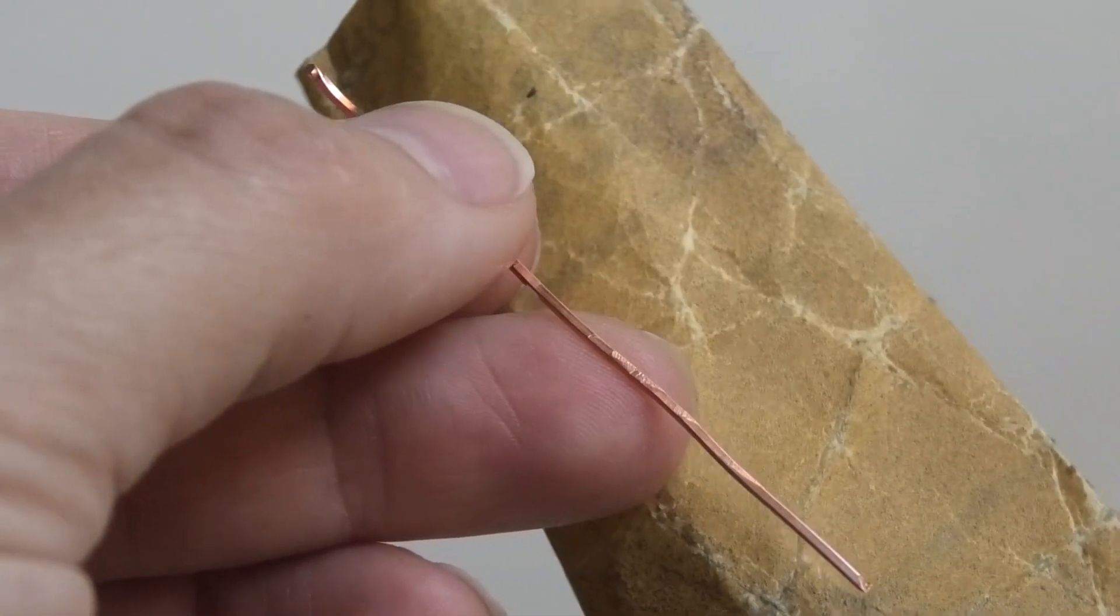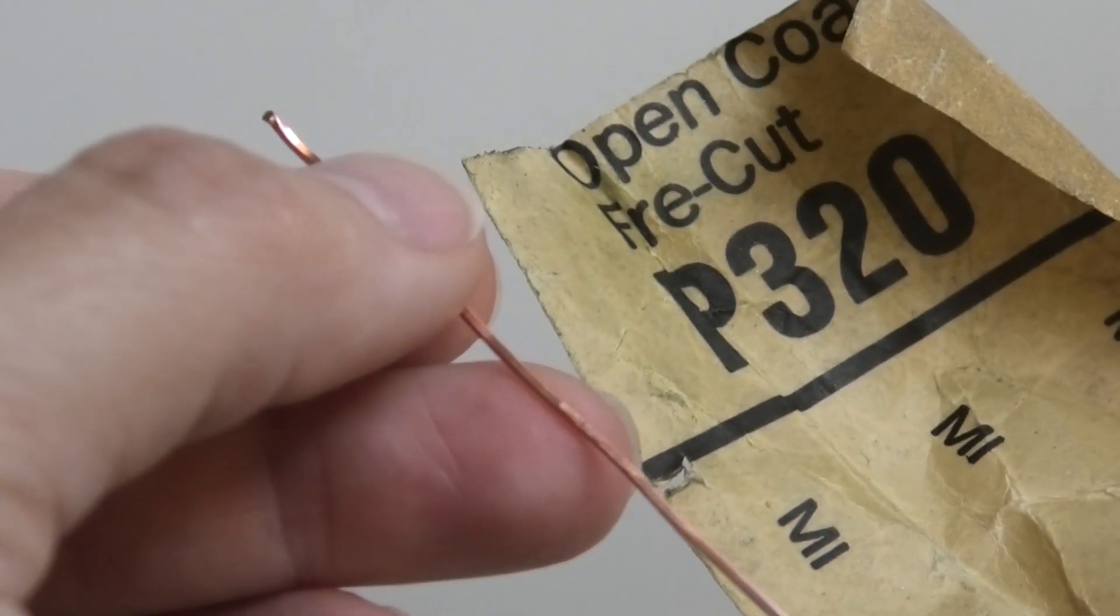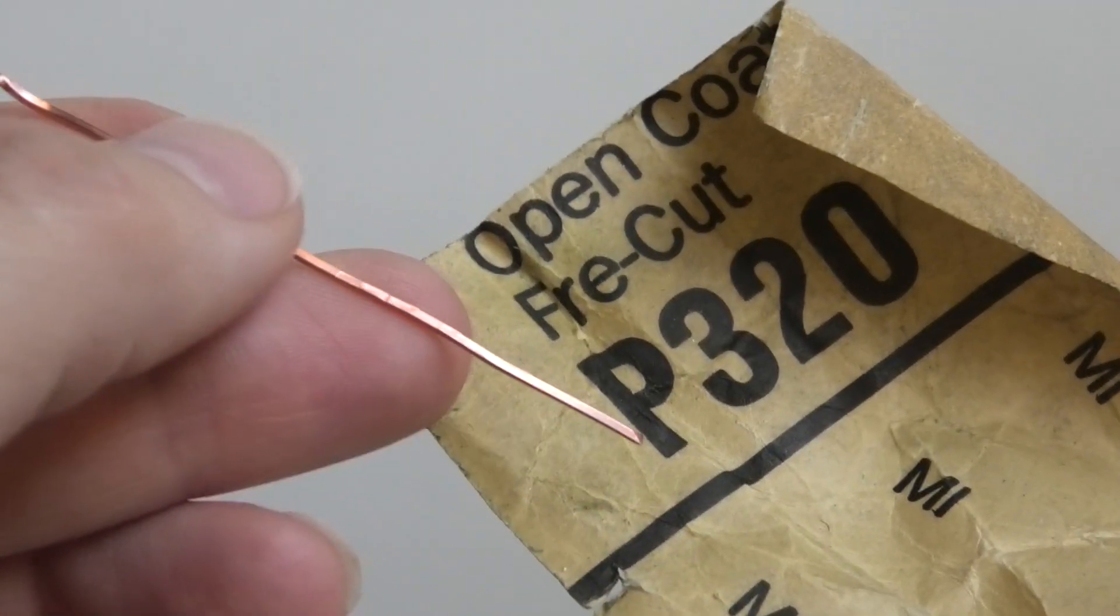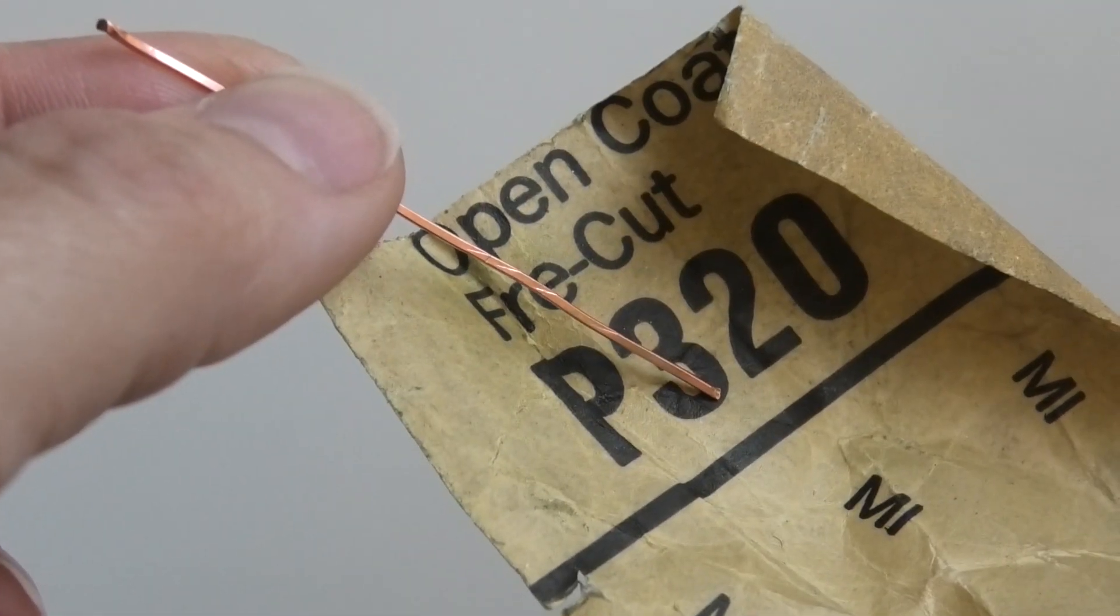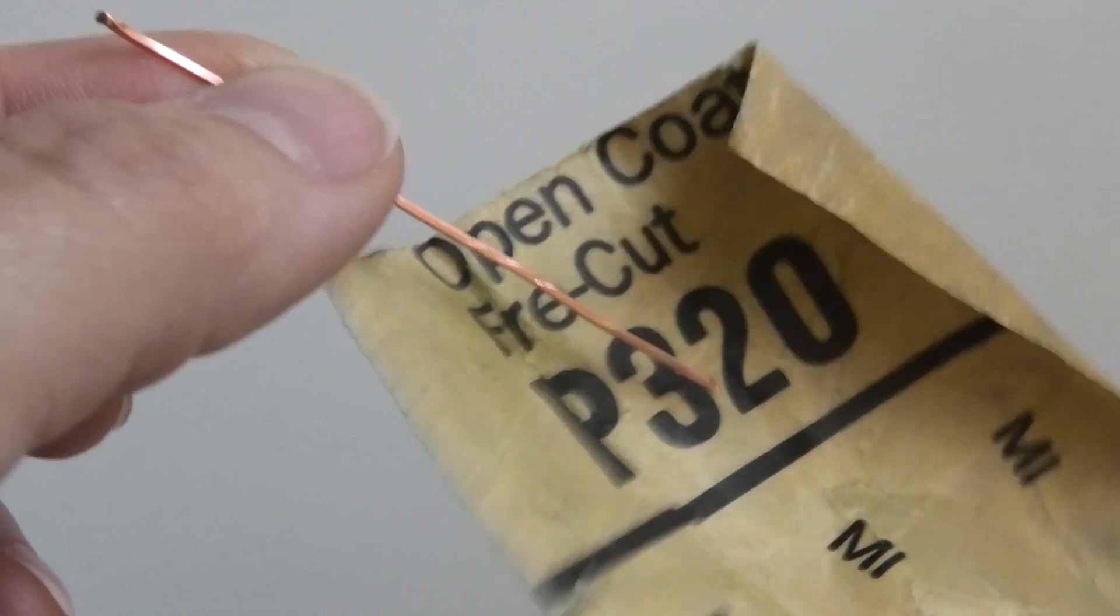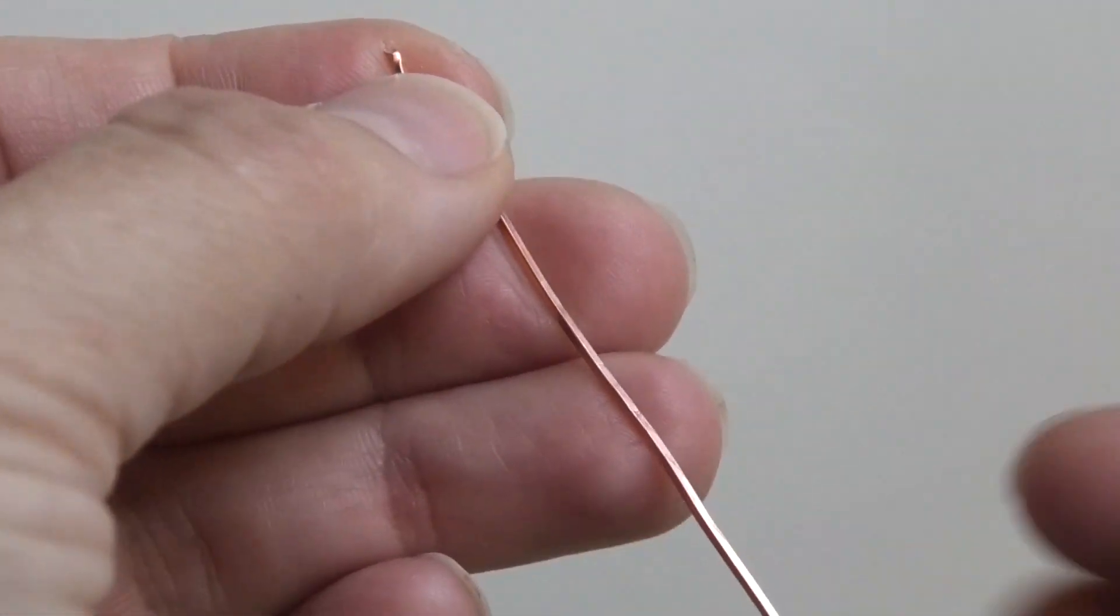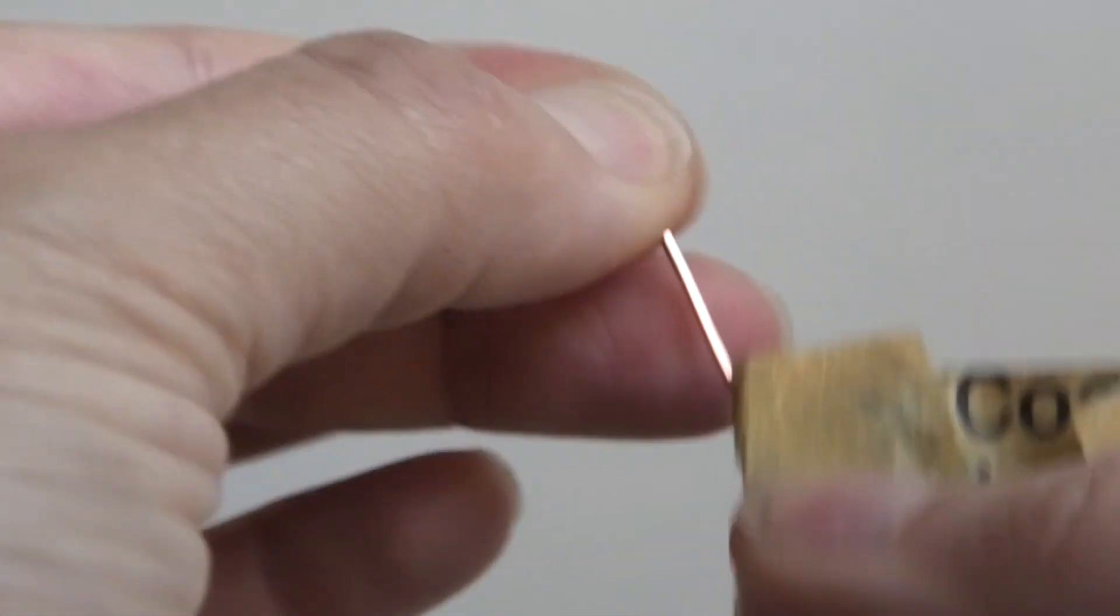By using a piece of sandpaper - I've had this sandpaper for a really long time, I bought it back when I was living in the US from Home Depot. So 320 is the grit, that's how fine the sandpaper is. And what you do is you just rub the wire with the sandpaper.